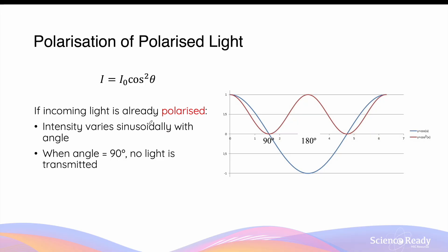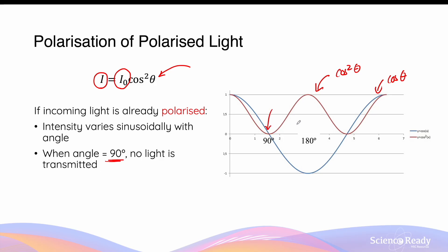When polarised light passes through a polariser, its intensity is also affected. However, unlike unpolarised light, the extent to which its intensity is reduced depends on the angle between the light's polarising axis and the transmission axis of the polariser — this is given by the angle theta in Malus's law. The final intensity as a proportion of the initial intensity varies sinusoidally, specifically as a function of cosine squared theta. The red curve on this graph shows the shape of the cosine squared function; compare this to the blue curve which shows the normal cosine function. When the angle between the polarising axis and the transmission axis equals 90 degrees — that is, when they are perpendicular — the value of cosine squared theta becomes zero, meaning no light will be able to pass through.